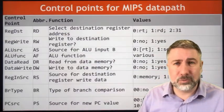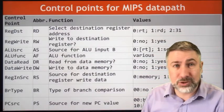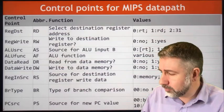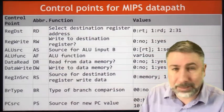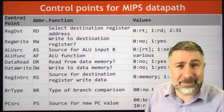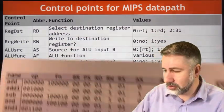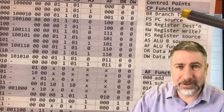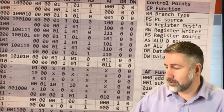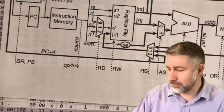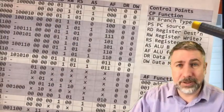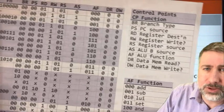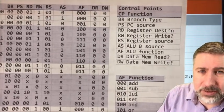The first thing we want to do is list all of our control points and note what values they can take. They're written in shorthand, abbreviated to a couple of letters on the hardware itself. On any exam, a picture will be provided showing the control points and their functionality. Listed left to right: branch type BR, PC source PS, register destination RD, register write RW, register source, ALU B source, ALU function, data memory read, and data memory write.